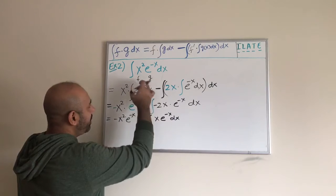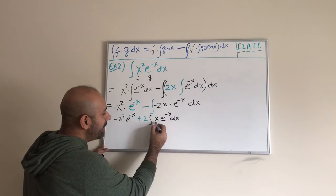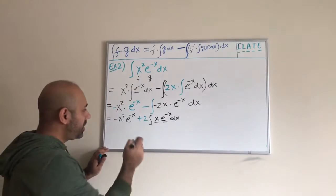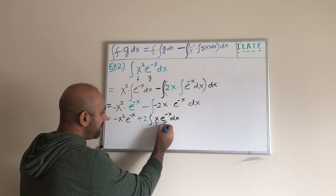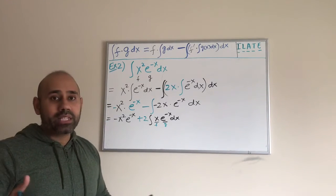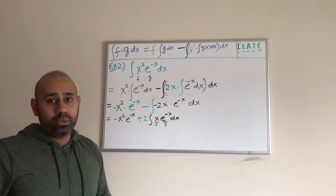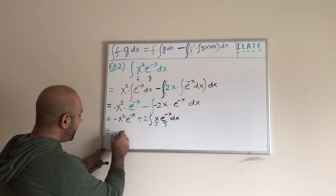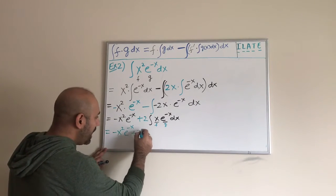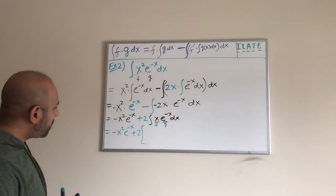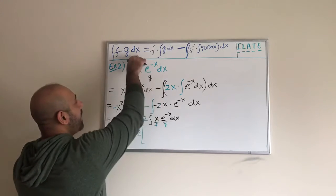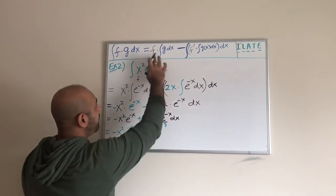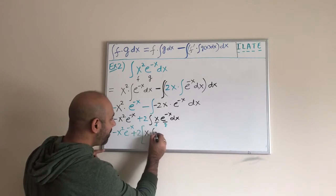It's the same thing — not too difficult. Instead of x squared, we have a linear function x, but again we're comparing an algebraic function and an exponential function, so the choice is obvious: we give preference to the algebraic function. So I'm treating x as my f function and e to the negative x as my g function. There's extra work and extra steps, but we cannot avoid those. So continuing, I rewrite the previous result, then plus 2, open a square bracket, and apply the right-hand side of the integration by parts formula: f as it is, times the integral of e to the power negative x dx.